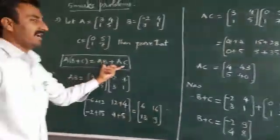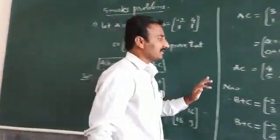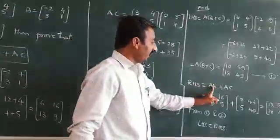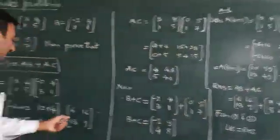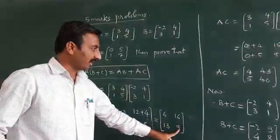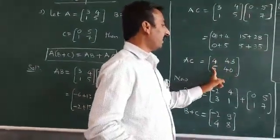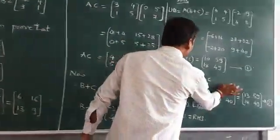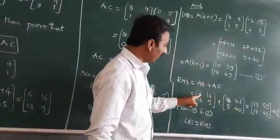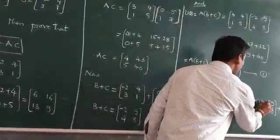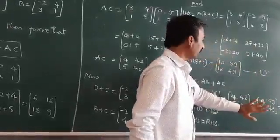I have one more task, addition of AB and AC. Let us go with RHS. RHS is AB plus AC. AB is [6, 16; 13, 9]. What is AC? [4, 43; 5, 40]. So here it is [4, 43; 5, 40]. Now let us add: 6 plus 4 is 10, 59, 18, 49.